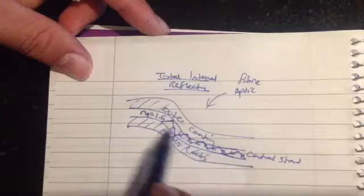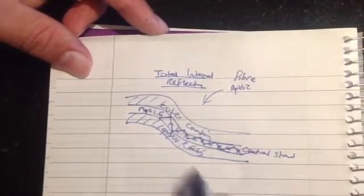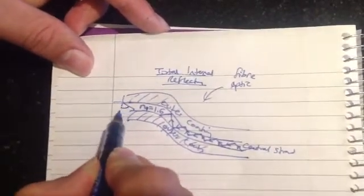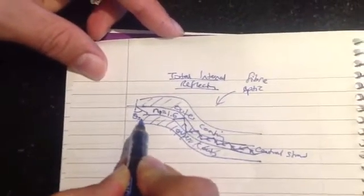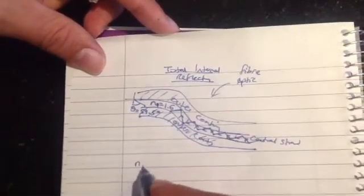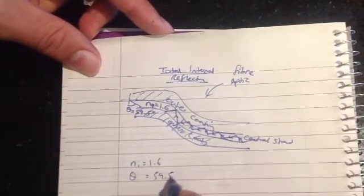And it also tells us the angle that these are hitting at. The angle it's hitting at equals 59.5 degrees. So they've given us N1, 1.6, and they've given us the angle, 59.5 degrees.